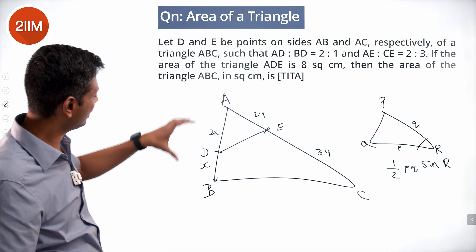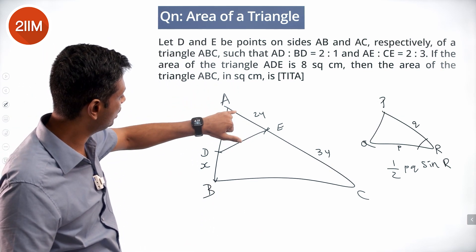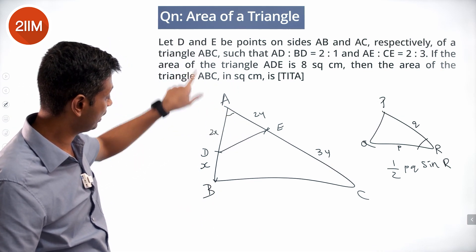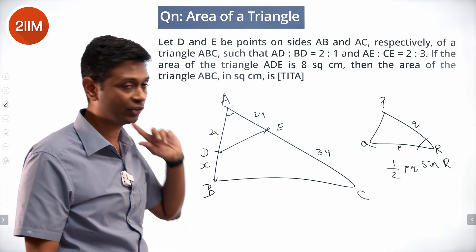This triangle, area of triangle ADE is half into AD into AE into sine of angle A. Area of triangle ABC is half into AB into AC into sine of angle A.